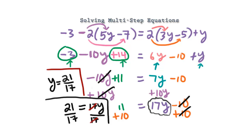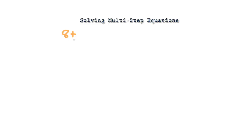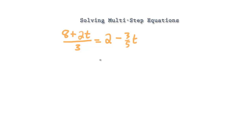You can leave it as 21 over 17 or convert it to a mixed number. That was a long one, so we're really happy with this one. Now I think you're ready for a challenge. Let's say we have 8 plus 2t all over 3, and it's going to equal 2 minus 3 over 5 times t.